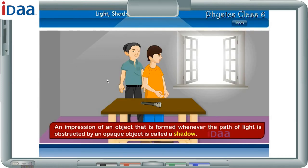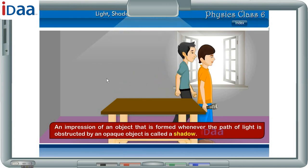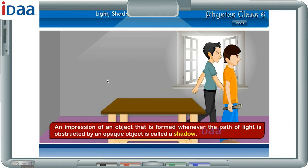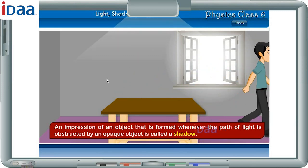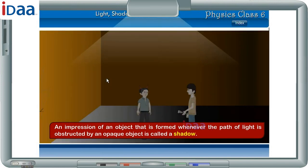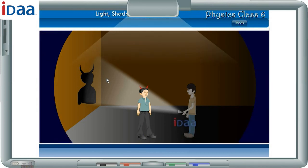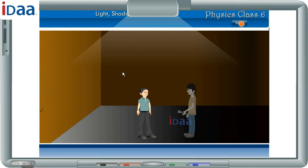An impression of an object that is formed whenever the path of light is obstructed by an opaque object is called a shadow. Thus, to get a shadow, we need a source of light and an opaque object.